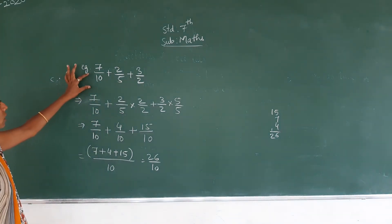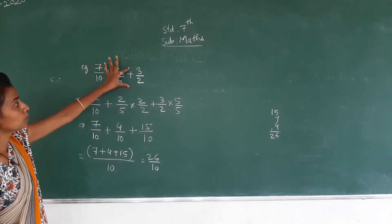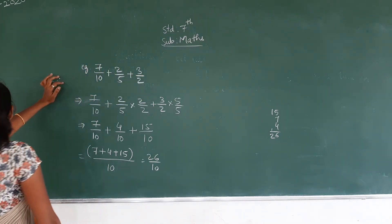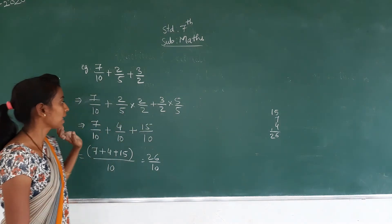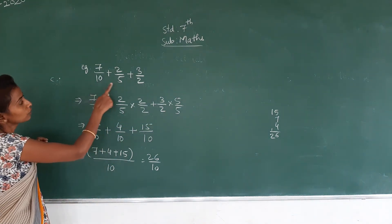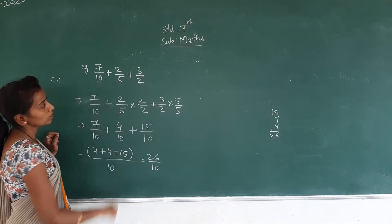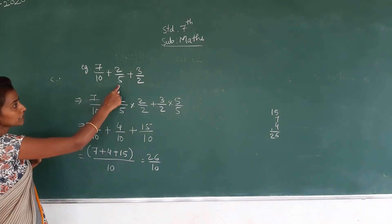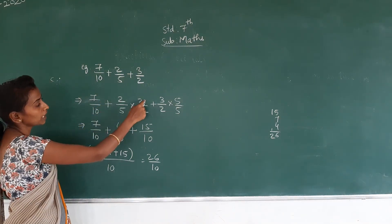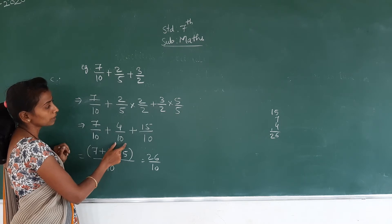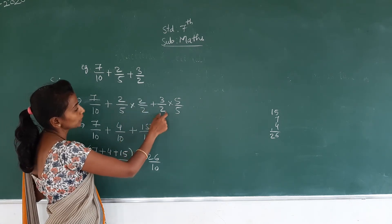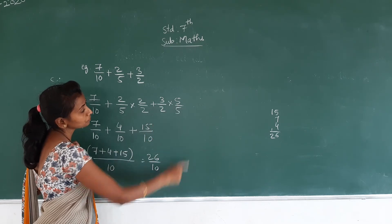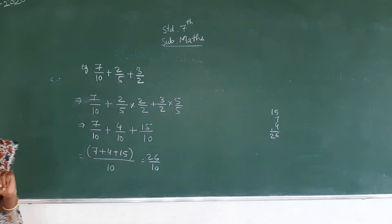One more time, 7/10 + 2/5 + 3/2 is your problem. For that we have to make equivalent fractions. For the second fraction, I am multiplying by 2/2, meaning 5 becomes 10. In the third fraction, 2 is there. We want to get 10 as the denominator, so I am multiplying by 5/5.